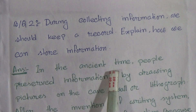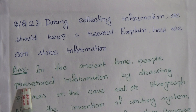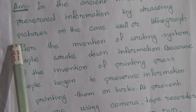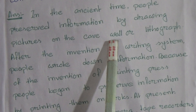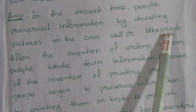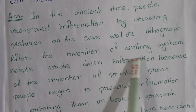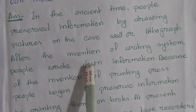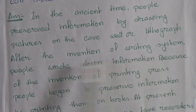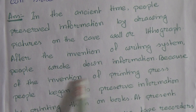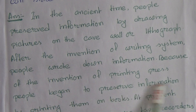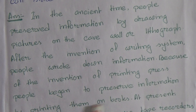Answer: In ancient times, people preserved information by drawing pictures on cave walls or in lithographs. After the invention of the writing system, people wrote down information. Because of the invention of the printing press, people began to preserve information by printing it in books.